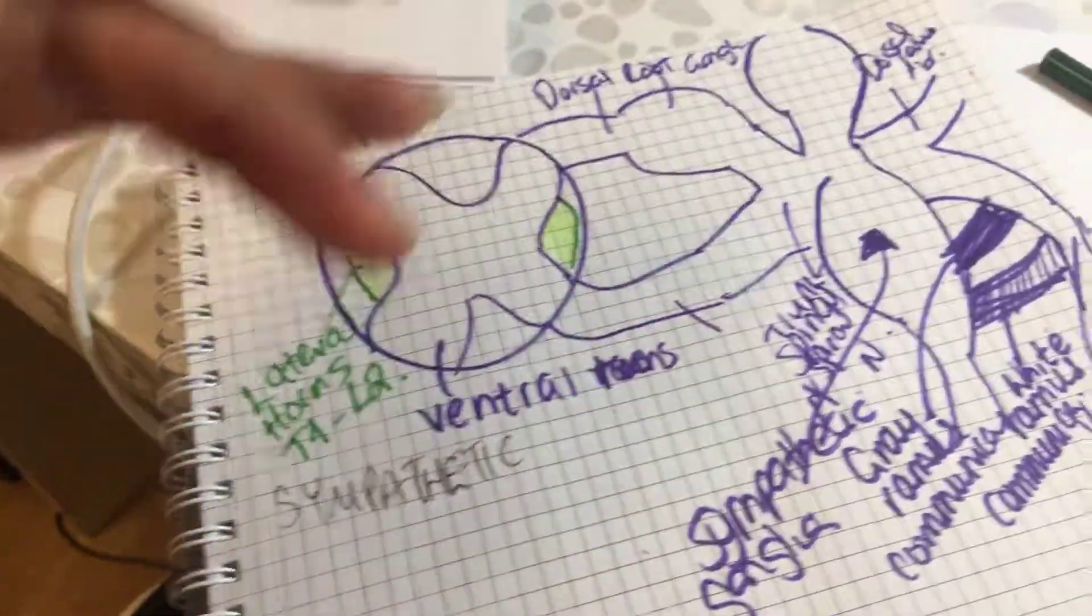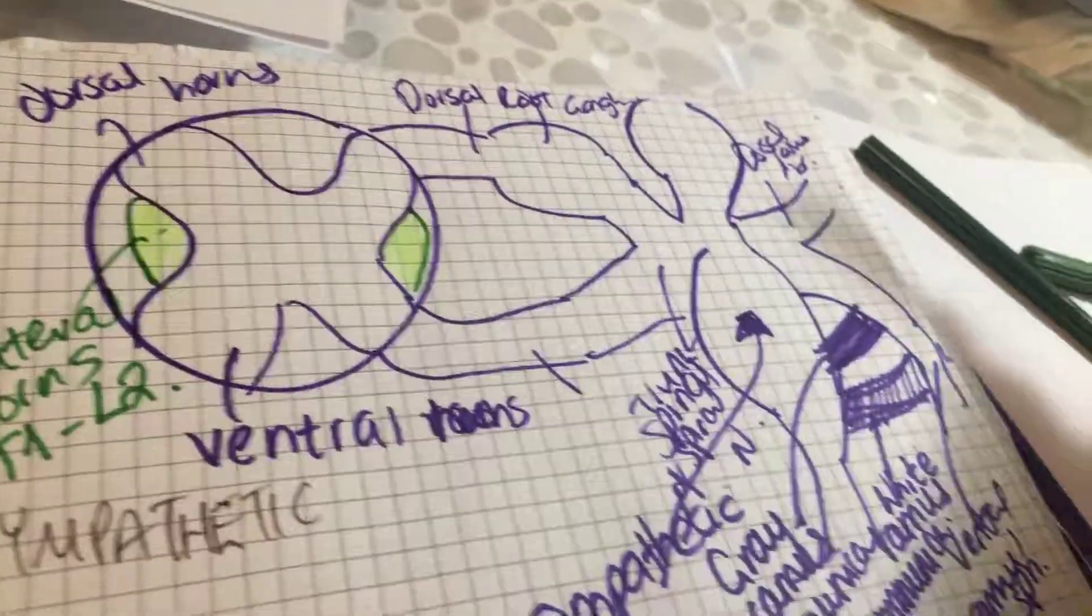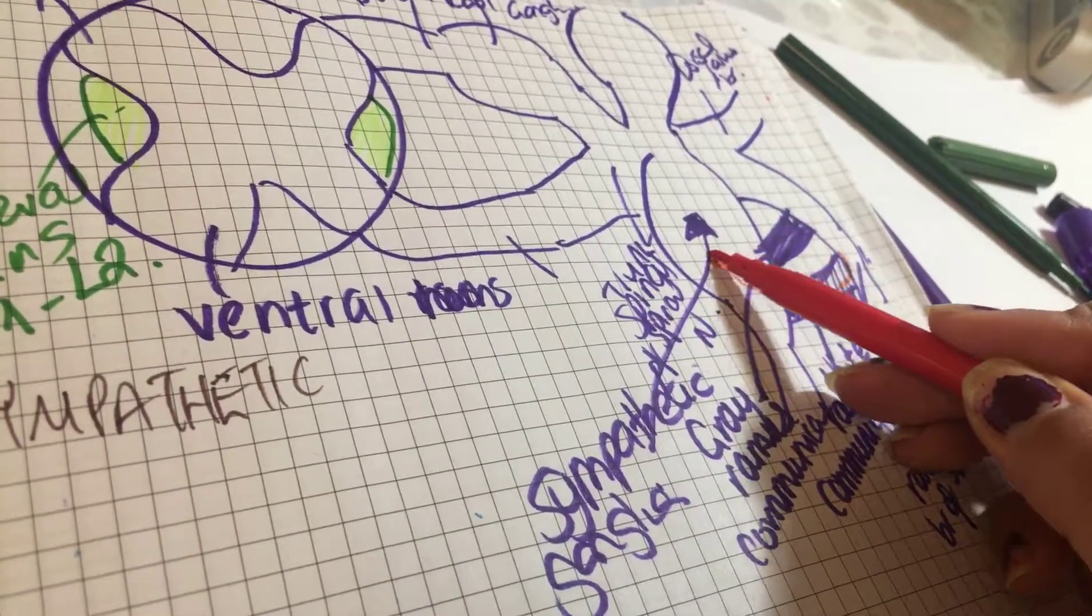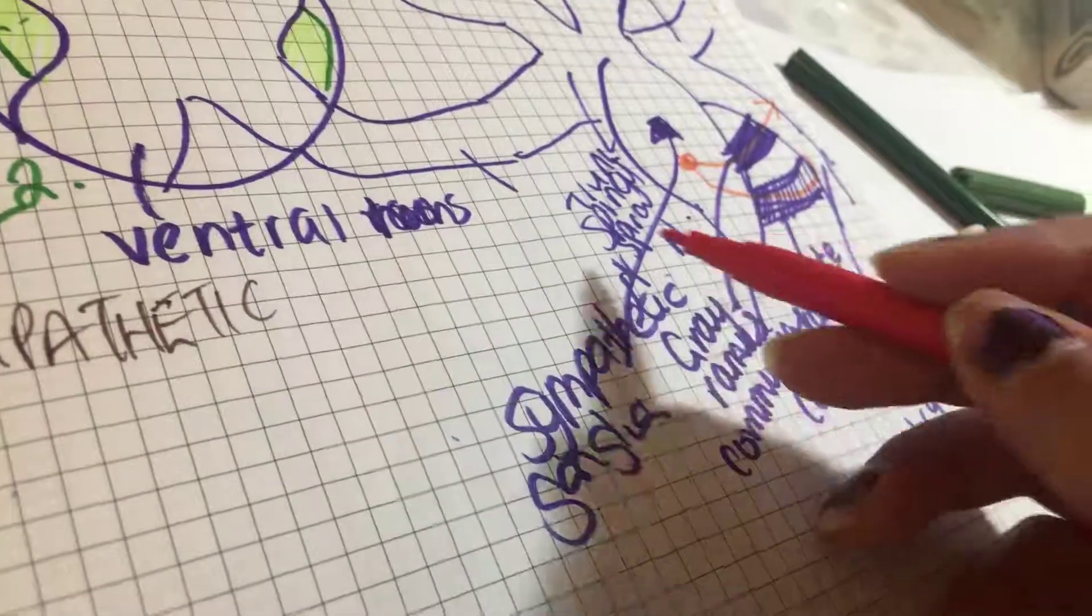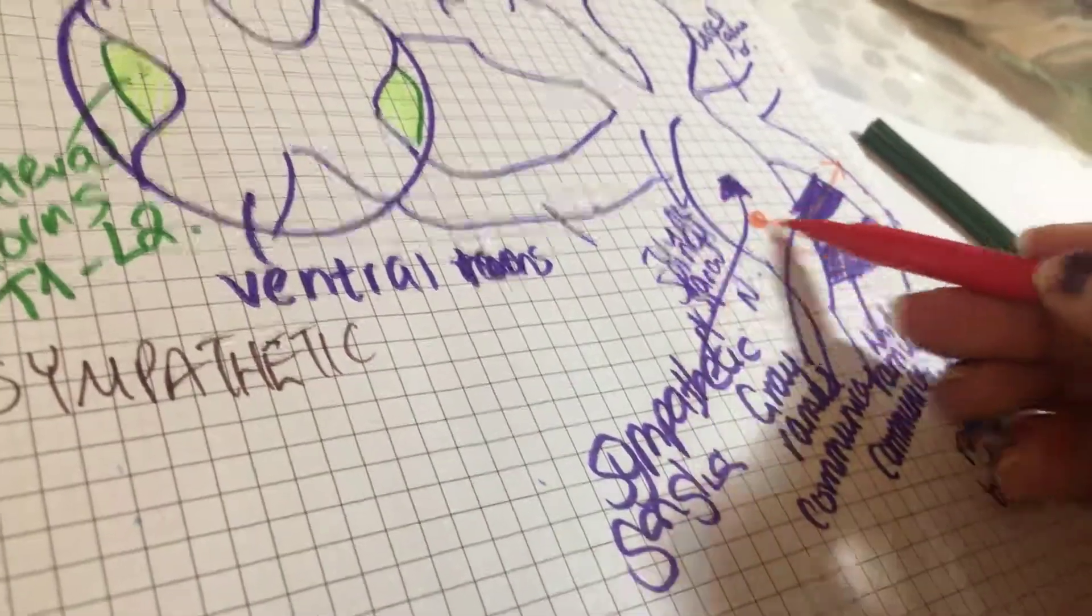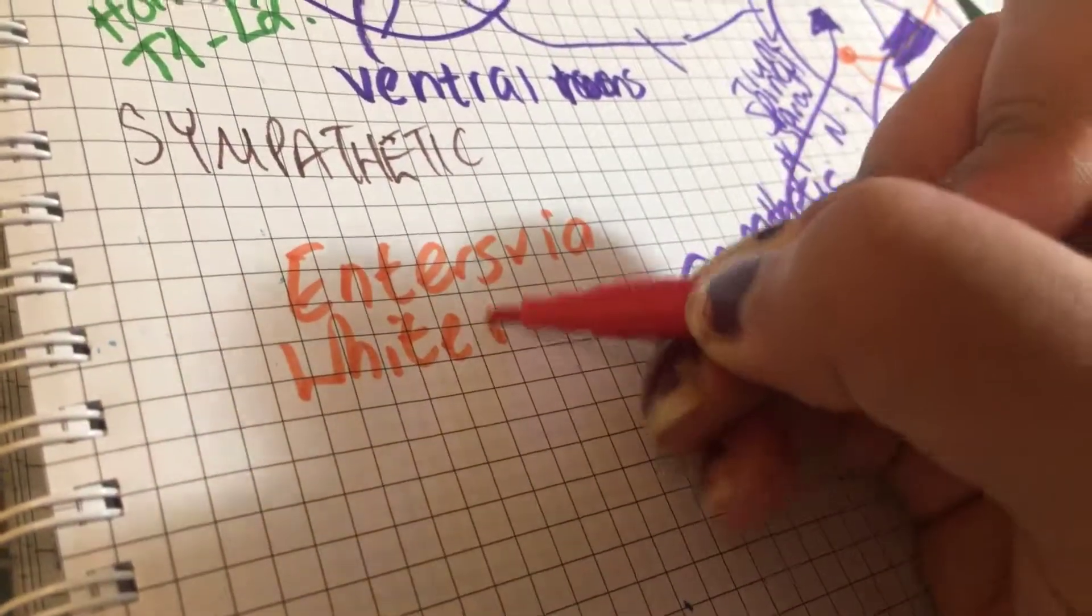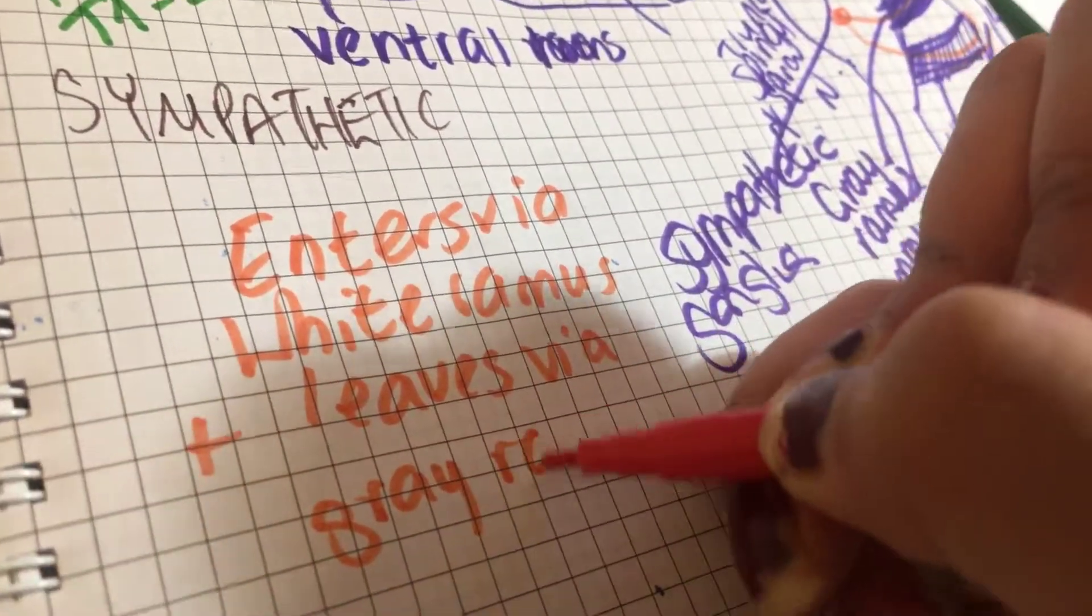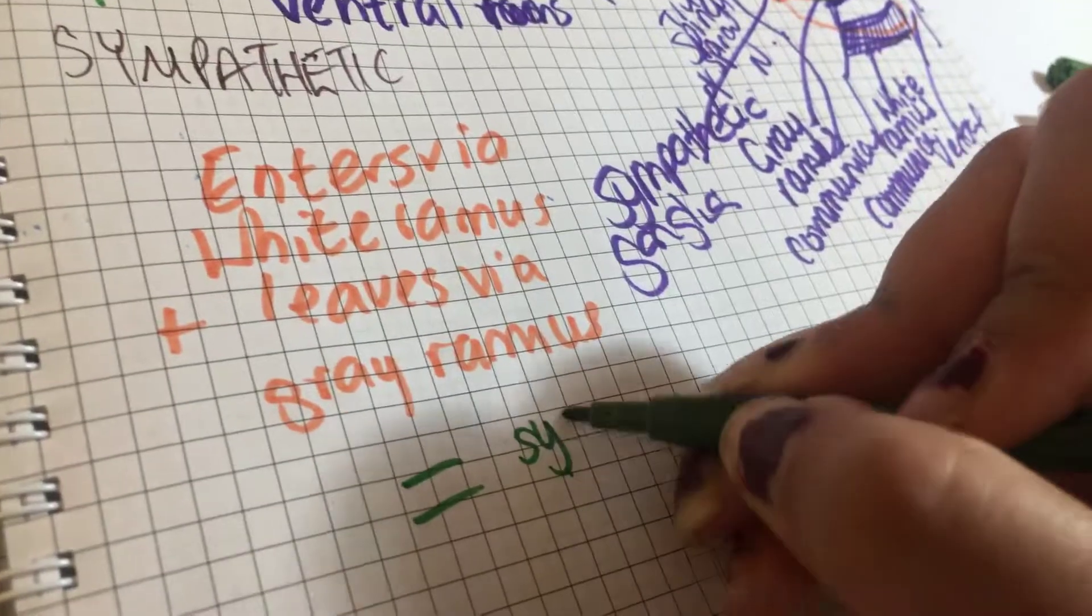Now, the neuron that leaves the spinal cord enters the sympathetic ganglion via these communicans. It will tend to enter via the white ramus communicans and leave via the grey ramus communicans, and that's kind of like the normal way. That's called synapsing at the same level. If it synapses within the same ganglion and leaves, comes through, enters via white ramus and leaves via grey ramus, that makes it essentially synapsing on the same level.